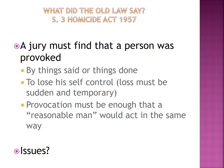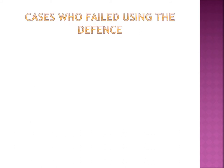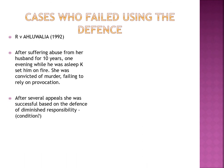The old law was under section 3 of the Homicide Act, following on from diminished responsibility. It is very short compared to the new law. A jury must find that the person was provoked by things said or done to lose their self-control, and as interpreted by the courts, that loss must be sudden and temporary — you lose control in the spur of the moment. The provocation must be enough that a reasonable man would act in the same way.